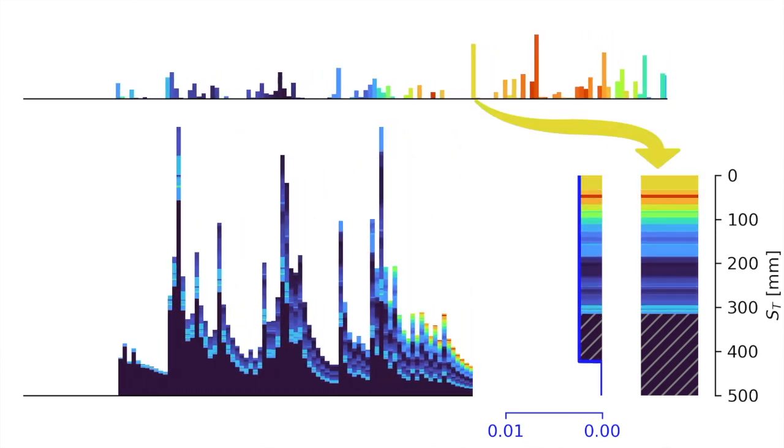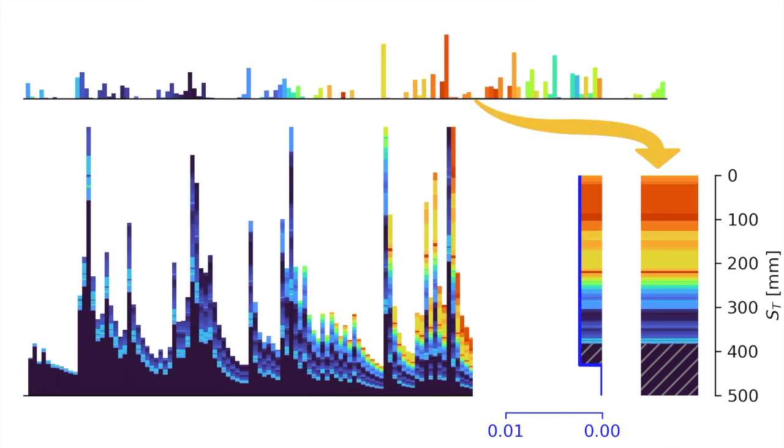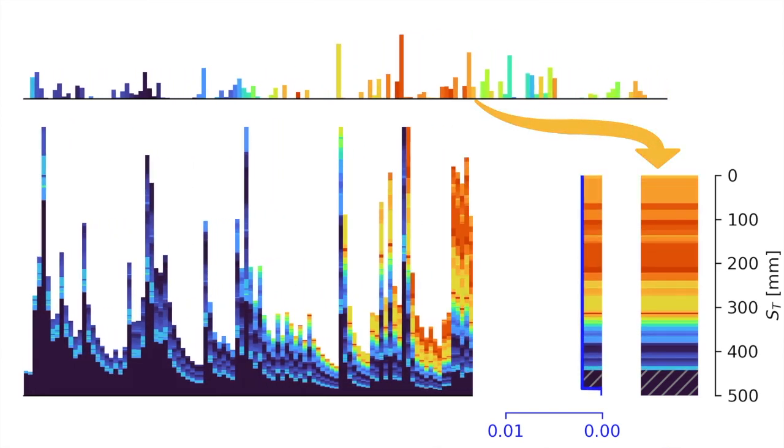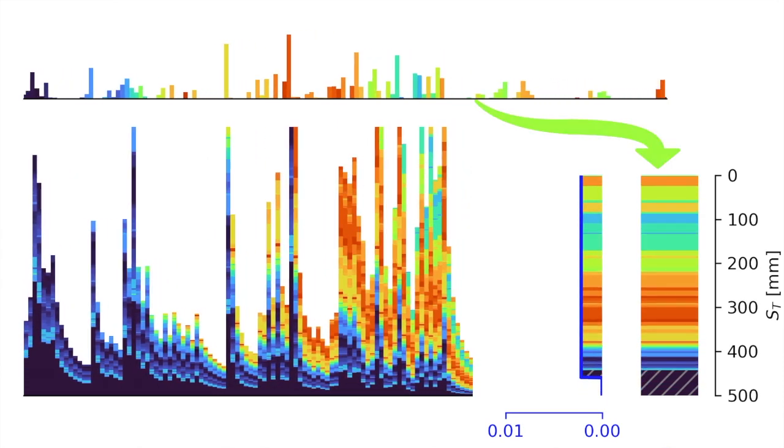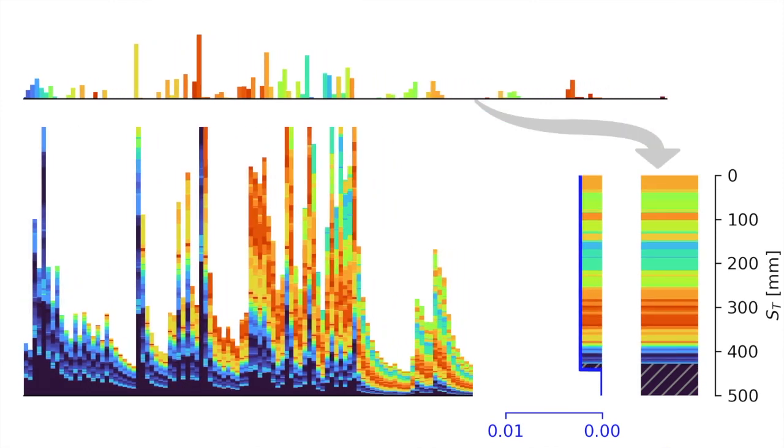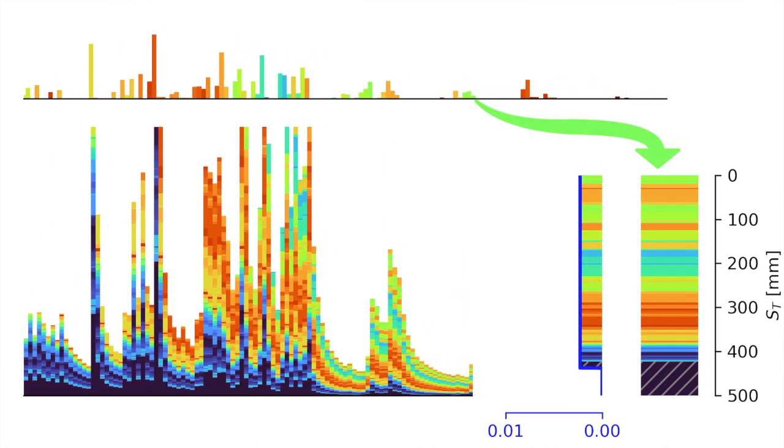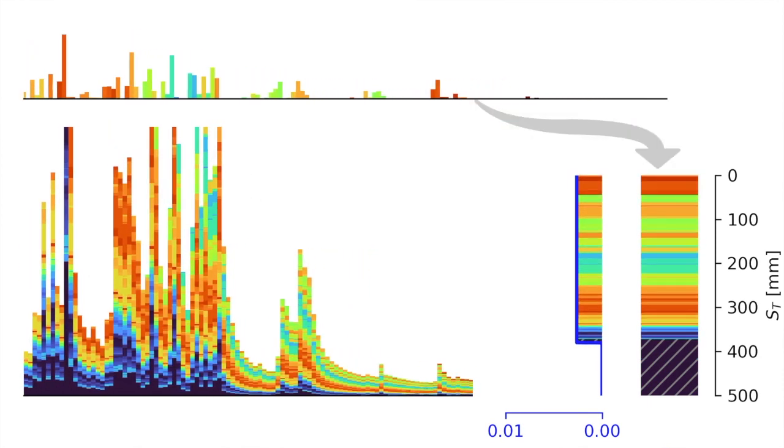Notice how the SAS function changes in time as the total storage in the system changes. When the total storage increases, the uniform distribution has to stretch so that water is still drawn evenly from all of the storage. A consequence of this is that the fraction of discharge drawn from the youngest, say, 100 mm of storage decreases. This is called a direct or normal storage effect.